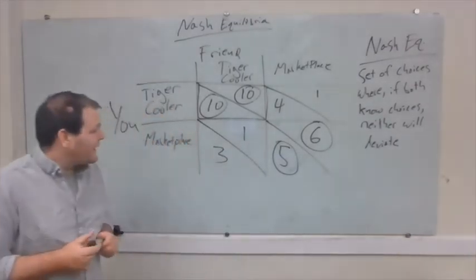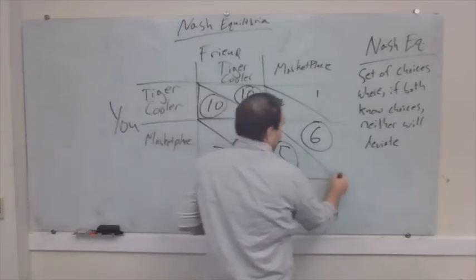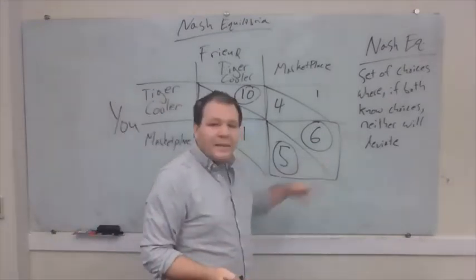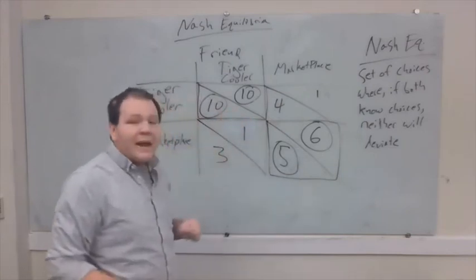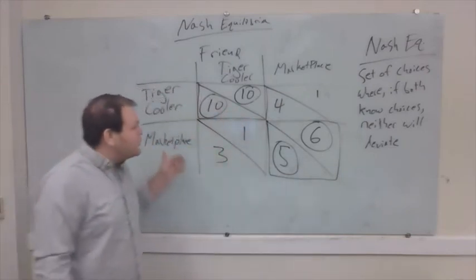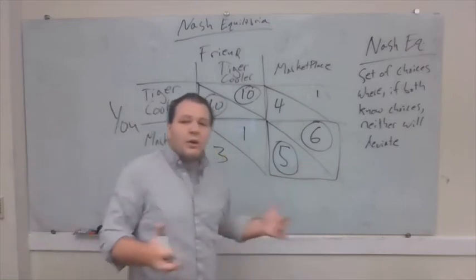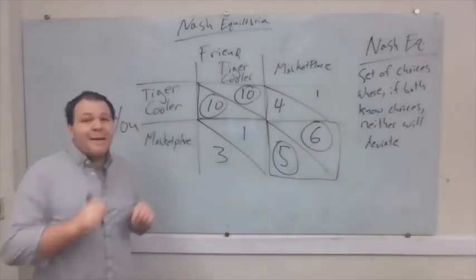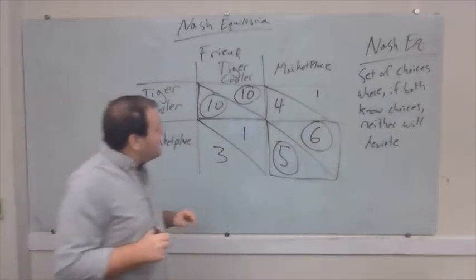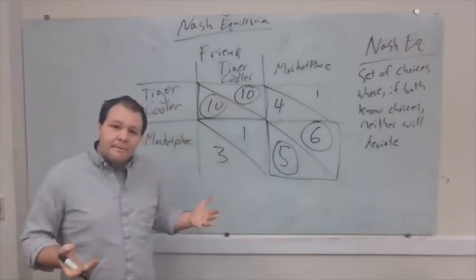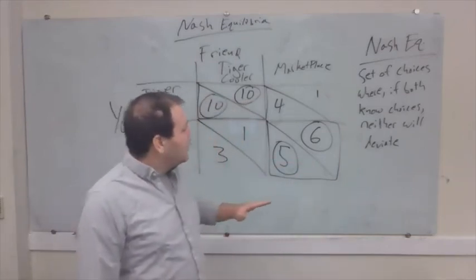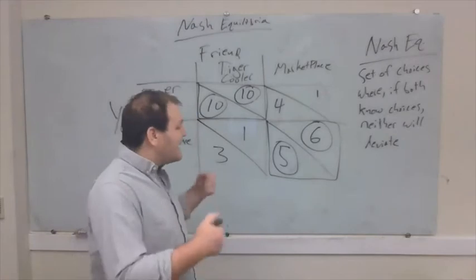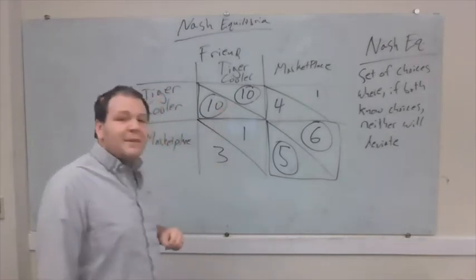You might be thinking: why would you both end up at the Marketplace? Can't we rule this out because there's a better Nash Equilibrium? In the case of two friends, we certainly hope so — we hope you have good enough communication to avoid eating at the place you like worse. But if we think about bigger societal problems, we might very easily end up in a situation where all of us have a reason to stick with a bad outcome, because we can't collectively understand each other well enough to move to something that's better for all of us.